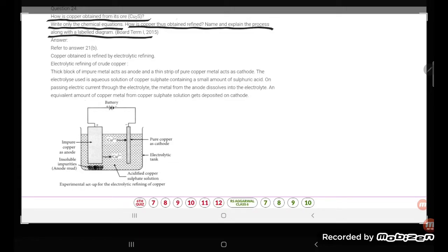This was asked in 2015. So, copper ore Cu2S is there. Firstly, you are going to do roasting. This process is called roasting (R-O-A-S-T-I-N-G). Roasting will give CuO plus SO2.